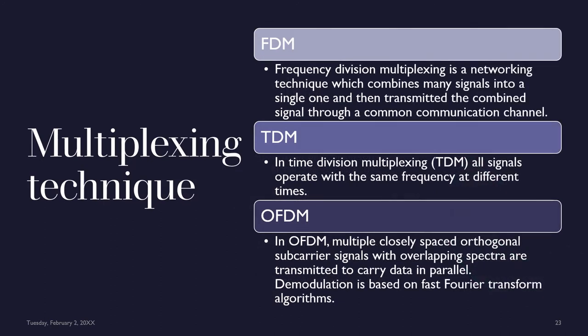There are three main multiplexing techniques: FDM, TDM, and OFDM. Frequency Division Multiplexing (FDM) is a networking technique that combines many signals into one and transmits the combined signal through a common communication channel. Time Division Multiplexing (TDM) has all signals operating at the same frequency but at different times. OFDM uses multiple closely spaced orthogonal subcarrier signals with overlapping spectra transmitted in parallel to carry data, with demodulation based on Fast Fourier Transform algorithms.